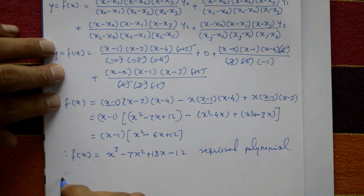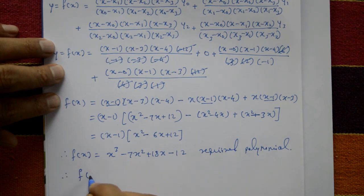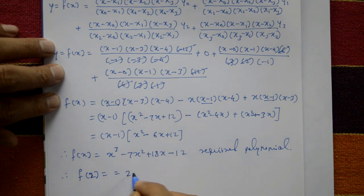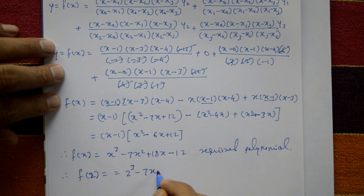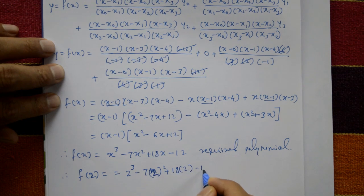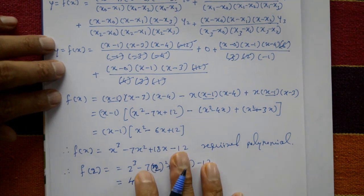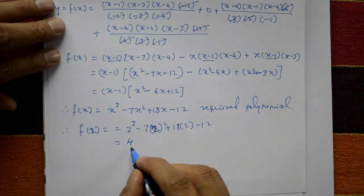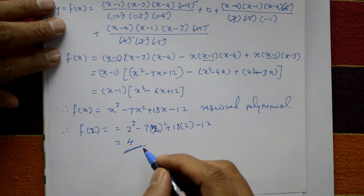Now estimate y at x equal to 2. Put x equal to 2 into the polynomial: 2 cubed minus 7 times 2 squared plus 18 times 2 minus 12. This equals 8 minus 28 plus 36 minus 12, which equals 4. This is the required solution.